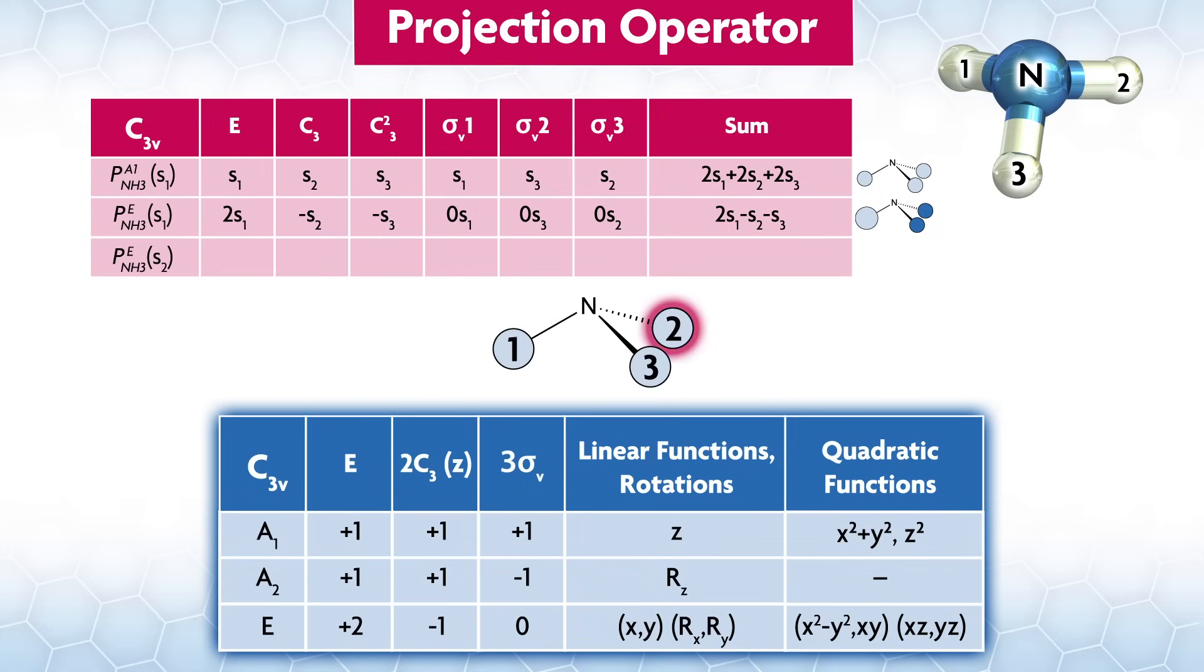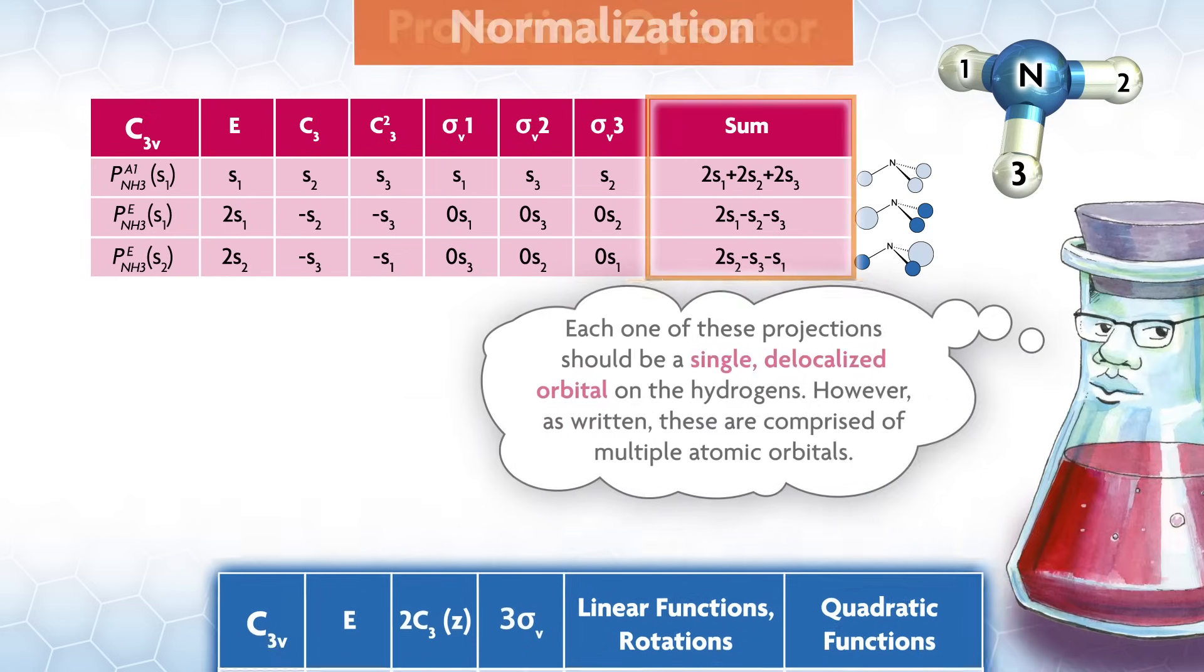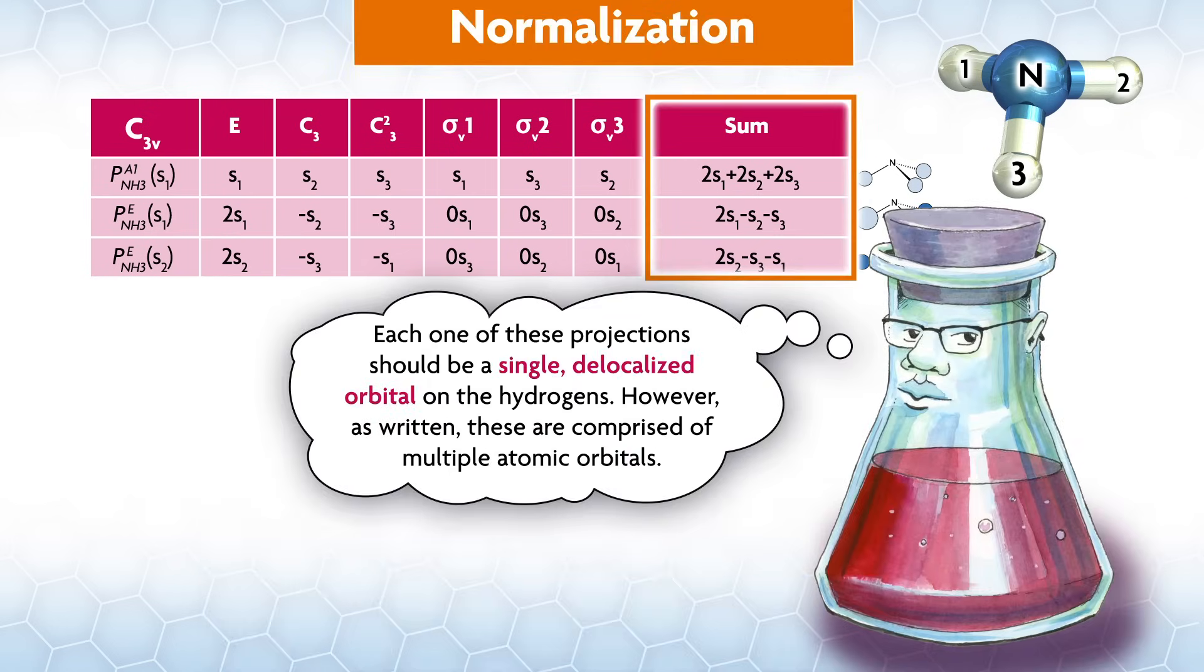We do the same procedure, only we use the s2 part of our basis. The sum gives the projection, which can be drawn as before. Each one of these projections should be a single delocalized orbital on the hydrogens. However, as written, these are comprised of multiple atomic orbitals. We can change them to be a single orbital through normalization, which retains the symmetry but adds a coefficient to the orbital to change the overall size.